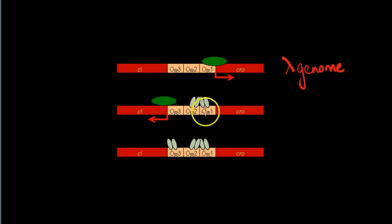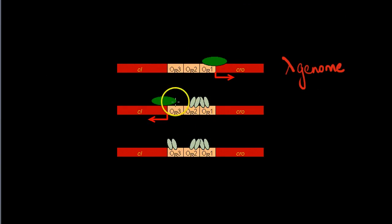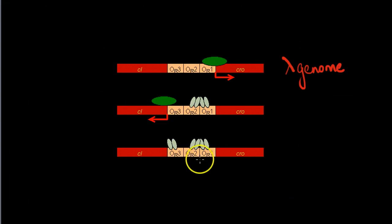However, if both of these operators are bound by the CI protein, it does not necessarily mean that this repressor protein would bind to the OR3 domain. Only in very high concentrations of the CI repressor protein will it bind to the OR3 domain.